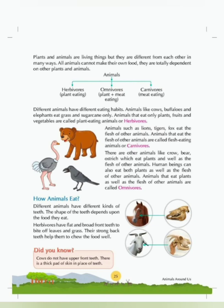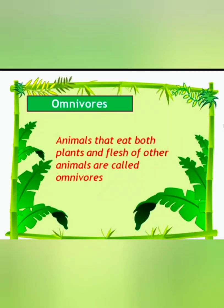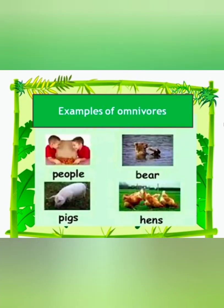There are other animals like crow, bear and ostrich which eat plants as well as flesh of other animals. Human beings can also eat both plants as well as the flesh of other animals. Animals that eat plants as well as the flesh of other animals are called omnivores. We human beings eat vegetables, fruits and also fish, chicken and egg which are animal products. Such animals are called omnivores.